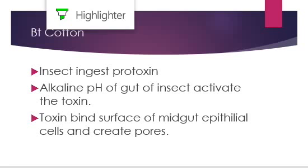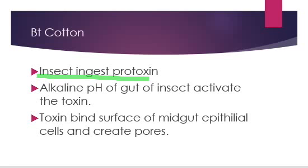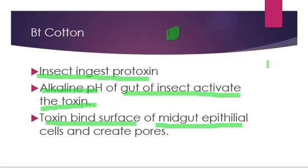And when is it going to be activated? When the insect ingests the pro-toxin. The pro-toxin is present in BT, and now the insect has ingested it. Now the alkaline pH of the gut of the insect will activate the toxin. That's why the toxin is not activated in the Bacillus — kyunki bacillus ka jo environment tha wo kaffi alag tha. Lekin jab ye particular toxin jayega inside the body of that particular insect, then it will find an alkaline or basic pH and it will get activated. Now the toxin binds with the surface of the mid gut — the middle portion of the alimentary canal.